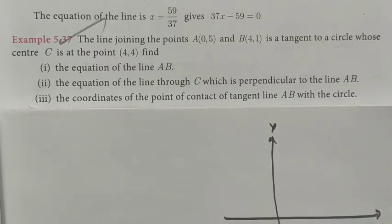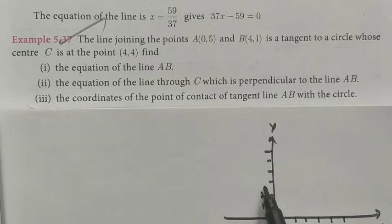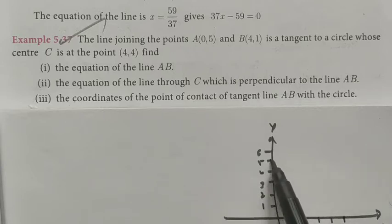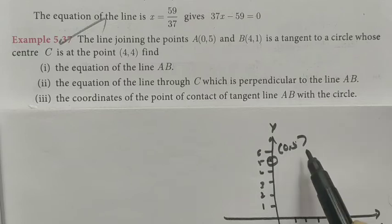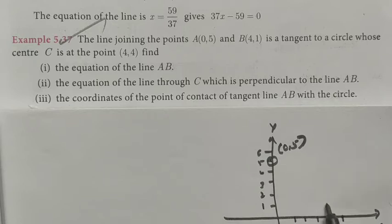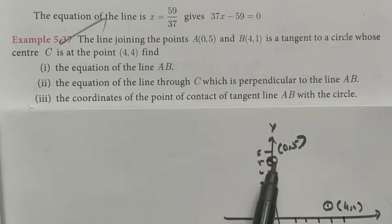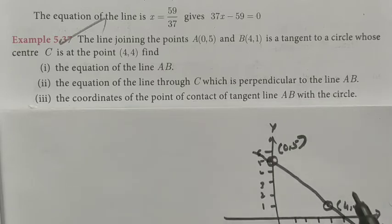Let me take x and y axes. The first point: x-axis 0, y-axis 5 — the point lies here, this is the point (0,5). And then the x-axis is 4, y-axis is 1 — the point lies here, this is the point (4,1). This line is tangent to the circle.